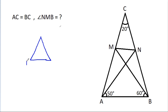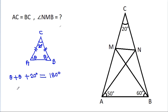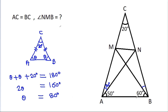In triangle ABC, AC is equal to BC, so these two base angles will be equal and angle ACB is 20 degrees. So theta plus theta plus 20 degrees equals 180 degrees. Therefore 2 theta equals 160 degrees and theta equals 80 degrees. So angle NAB gives 80 minus 50 equals 30 degrees, and angle MBA gives 80 minus 60 equals 20 degrees.